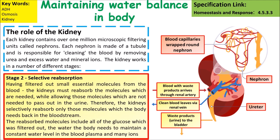Stage two is selective reabsorption. Having filtered out small essential molecules from the blood, the kidneys must reabsorb the molecules which are needed. The kidneys selectively reabsorb only those molecules the body needs back into the bloodstream. The reabsorbed molecules include glucose, the water needed to maintain a constant water level, and other mineral ions.